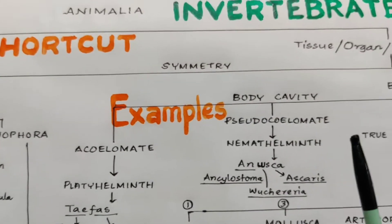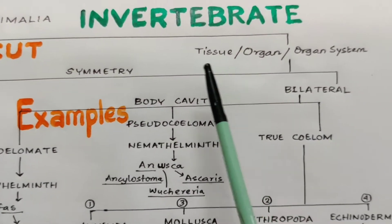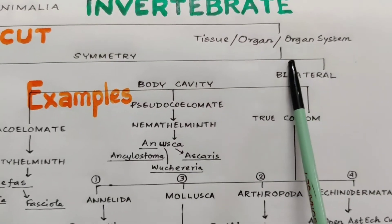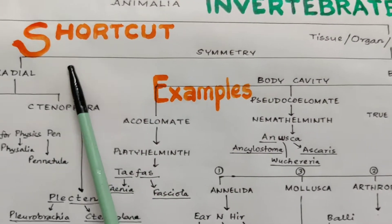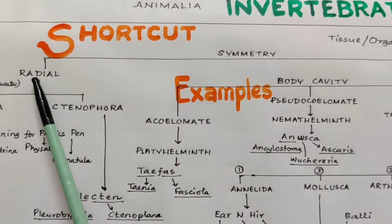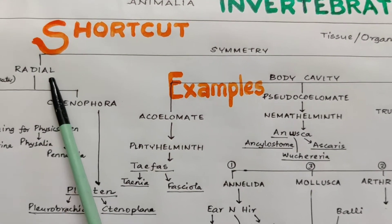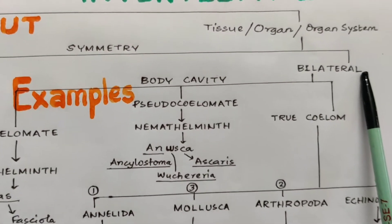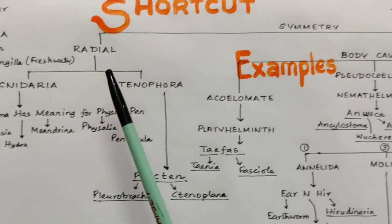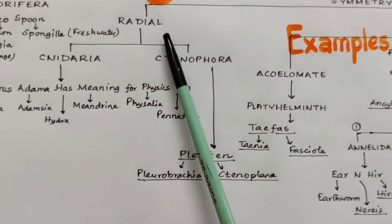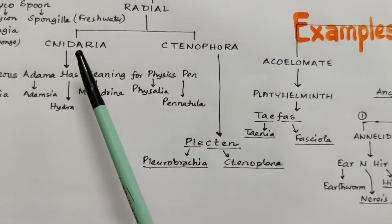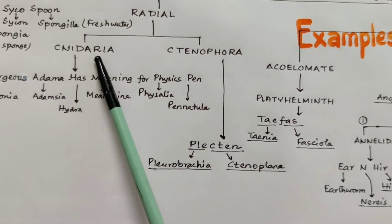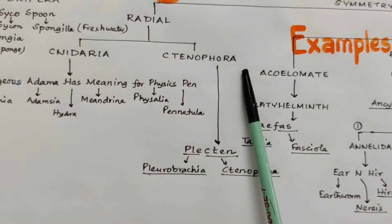Now coming to the other one — tissue, organ, or organ system level of organization. We have divided this into two categories: one is radially symmetrical, another is bilaterally symmetrical. In case of radial symmetry, we have got two phyla — Phylum Cnidaria and Phylum Ctenophora.